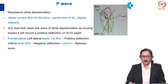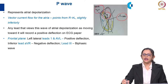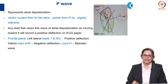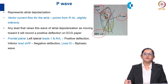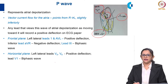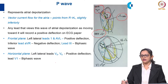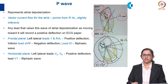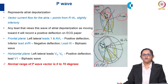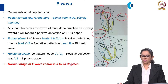In the frontal plane, AVL will also have a positive deflection. AVR will show a negative deflection because the wave is moving against it. Lead III will produce a biphasic wave because the angle is perpendicular to the position of that lead. In the horizontal plane, the left lateral leads V5 and V6 will produce a positive wave as the wave moves toward those leads, and V1 will produce a biphasic wave because it is perpendicular to the wave of atrial depolarization. The normal range of P wave vector always lies between 0 to 70 degrees.